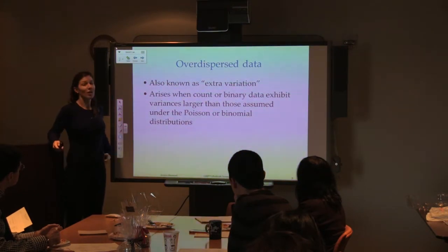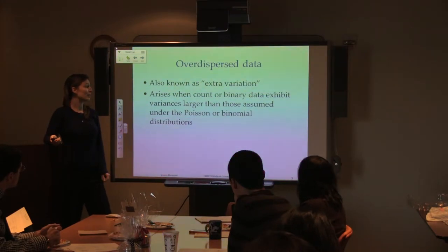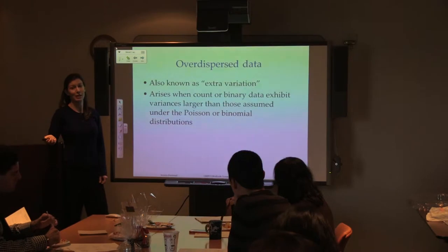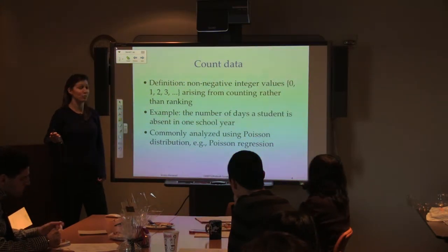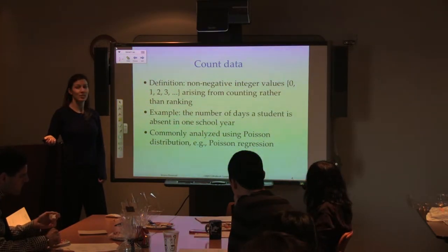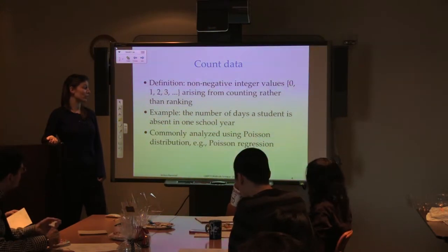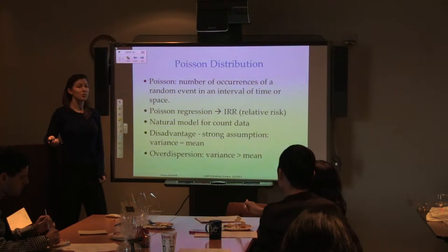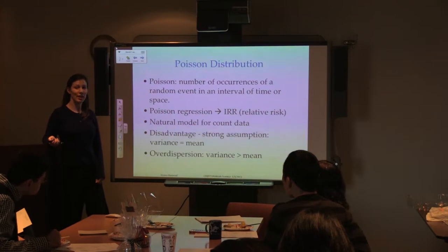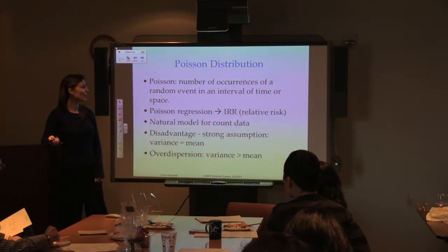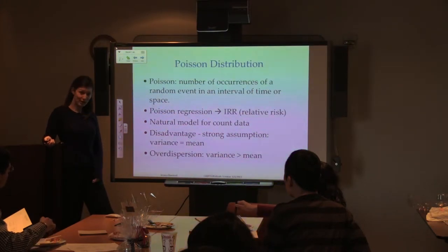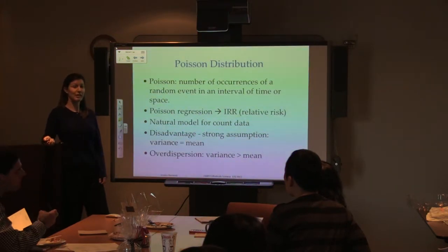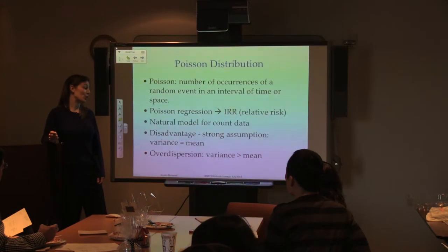Over-dispersion can also be called extra variation. It arises when count or binary data exhibit variances larger than what is assumed under the Poisson or binomial distributions. Count data are non-negative integer values that arise from counting, such as the number of days a student is absent in one school year. Count data is commonly analyzed using Poisson regression, which gives an estimate that can be transformed into the relative risk. However, the Poisson distribution has a strong assumption: the variance equals the mean. When the variance is larger than the mean, you have over-dispersion.